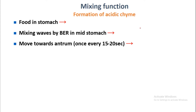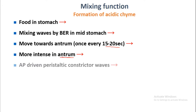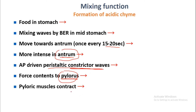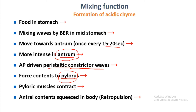These BER waves move towards the antrum once every 15 to 20 seconds, and are more intense in the antrum. Action potential-driven peristaltic constrictor waves start from the antrum and move towards the pylorus, producing strong contraction waves of the musculature of the stomach.